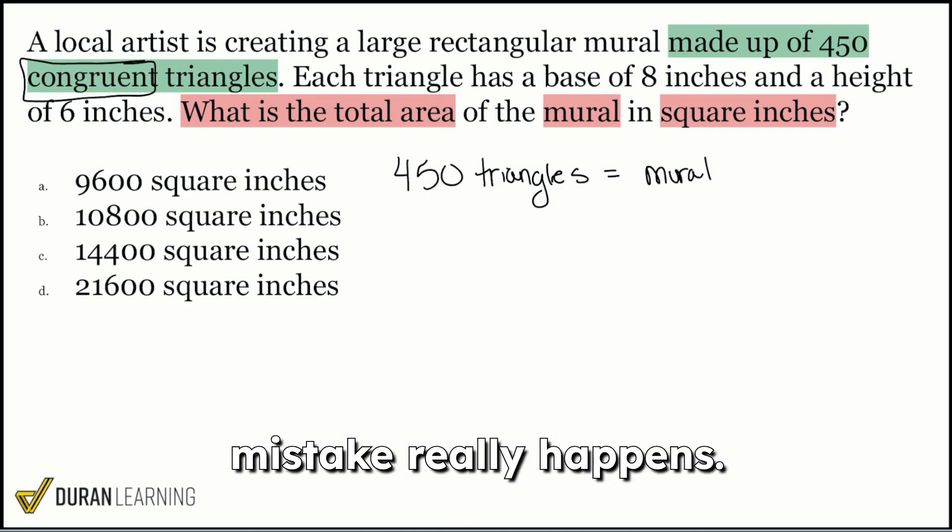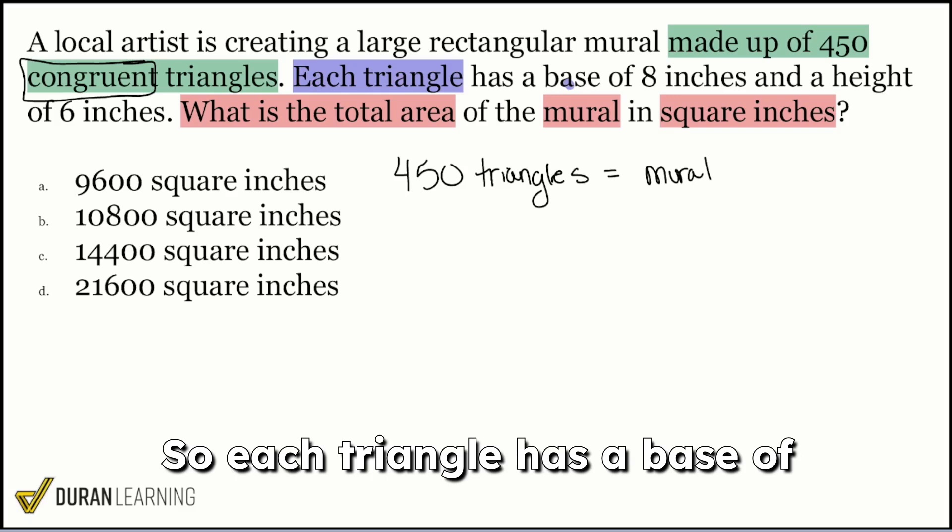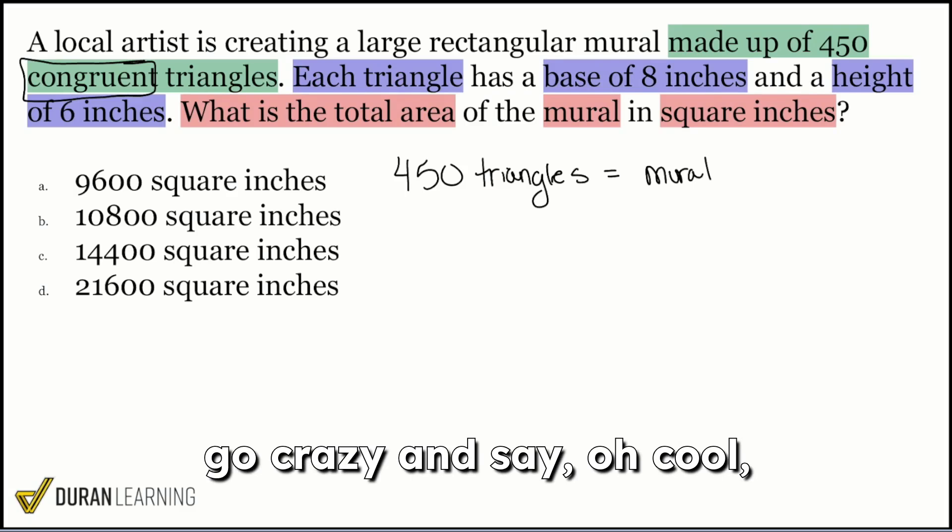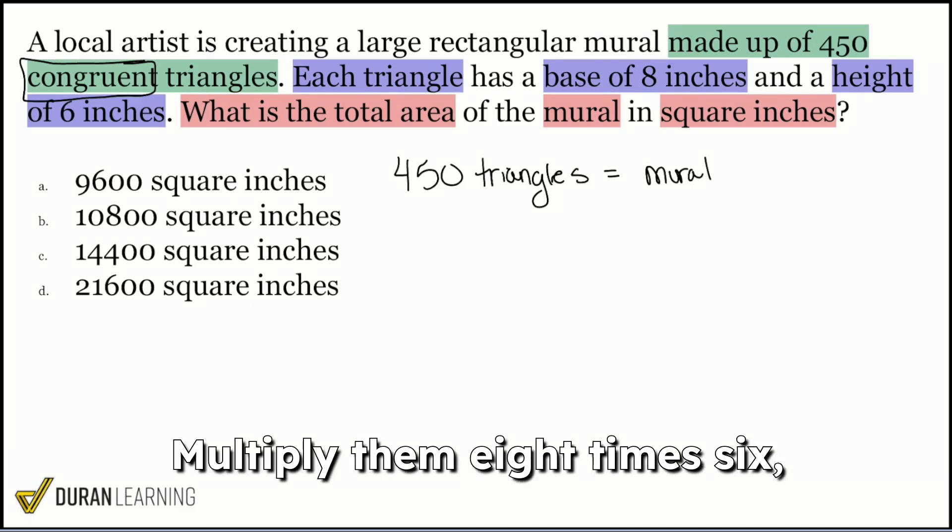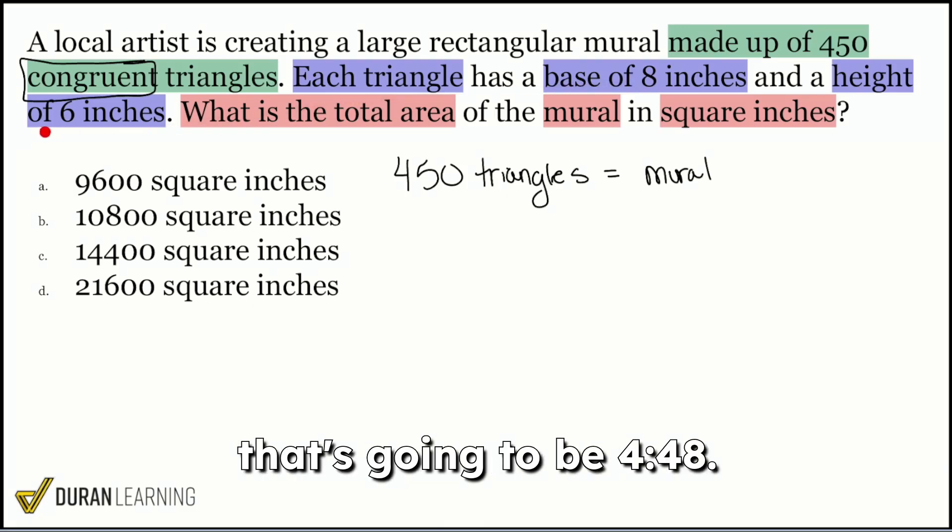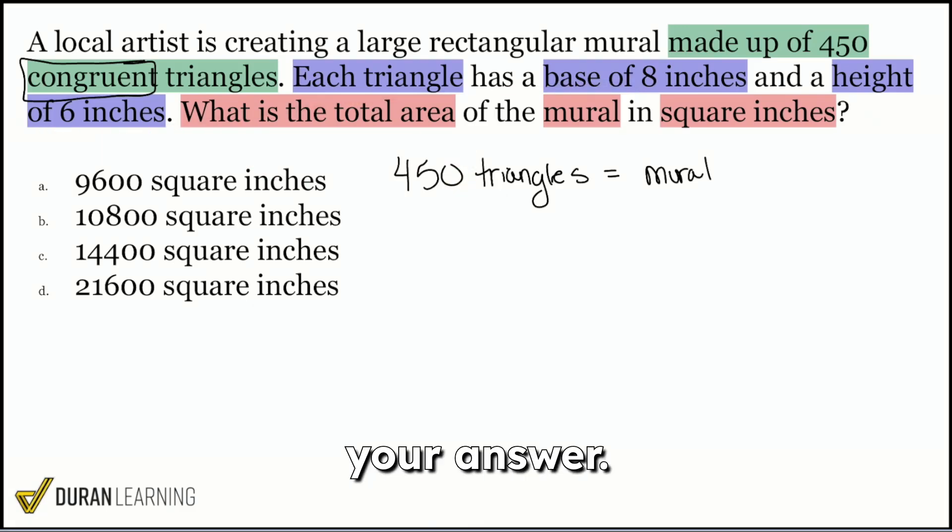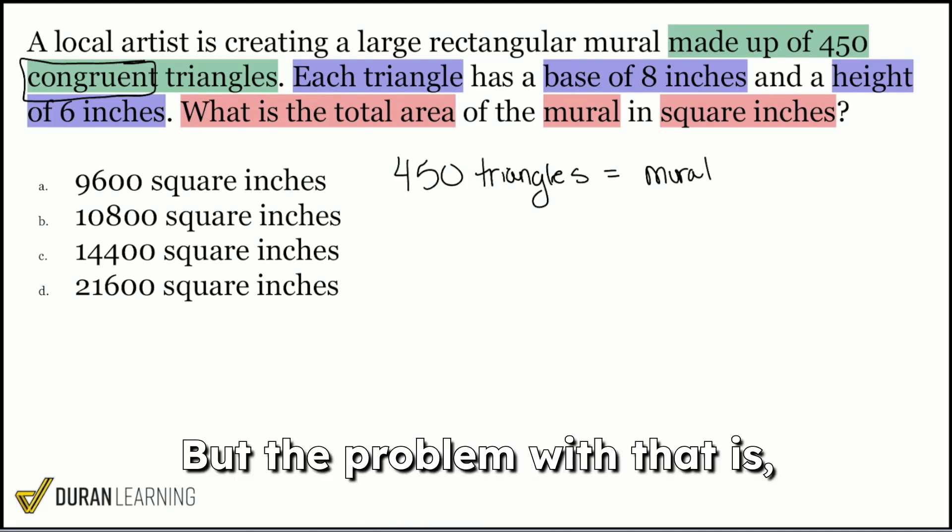And this is where the common mistake really happens. So each triangle has a base of 8 inches and a height of 6. Most people will immediately go crazy and say, oh, cool, I have the numbers. Multiply them. 8 times 6, that's going to be 48. Then multiply by 450, and you think you might have your answer. But the problem with that is, my party people,